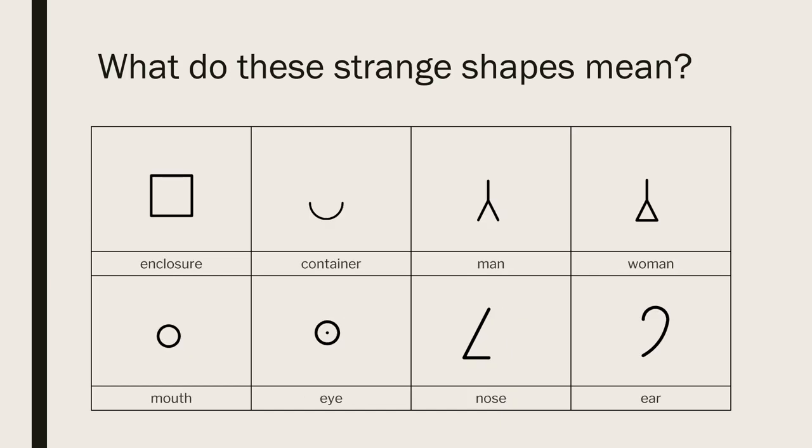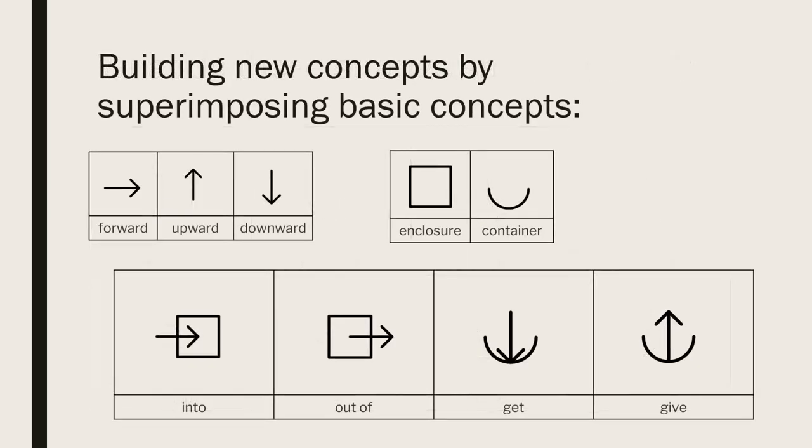Here are more simple shapes for simple concepts. More complex concepts can be constructed from these simpler concepts by overlaying one on the other. Here we see the arrow concepts overlaid on the enclosure and container concepts.